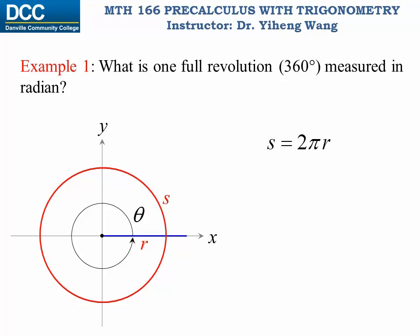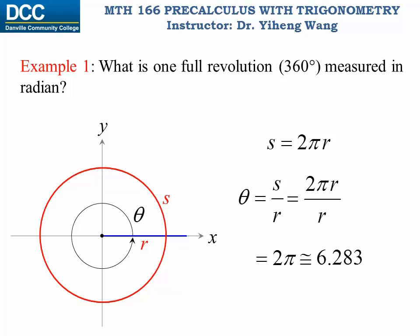By definition, theta equals s over r, which is 2πr over r, and we can cancel out the r, so theta simply equals 2π. You may want to approximate this as about 6.283. However, if you can represent an angle as a multiple of π, please avoid approximating it.